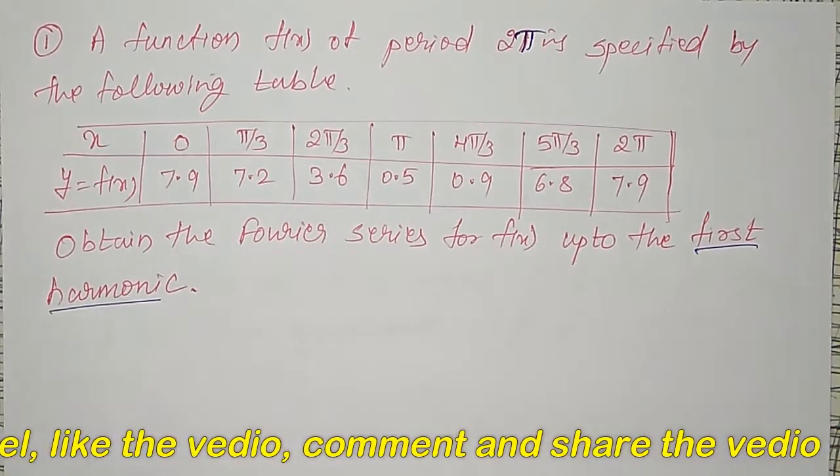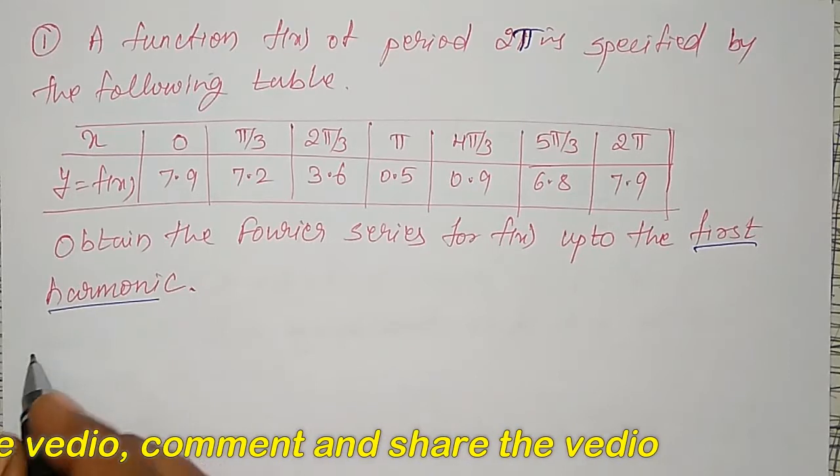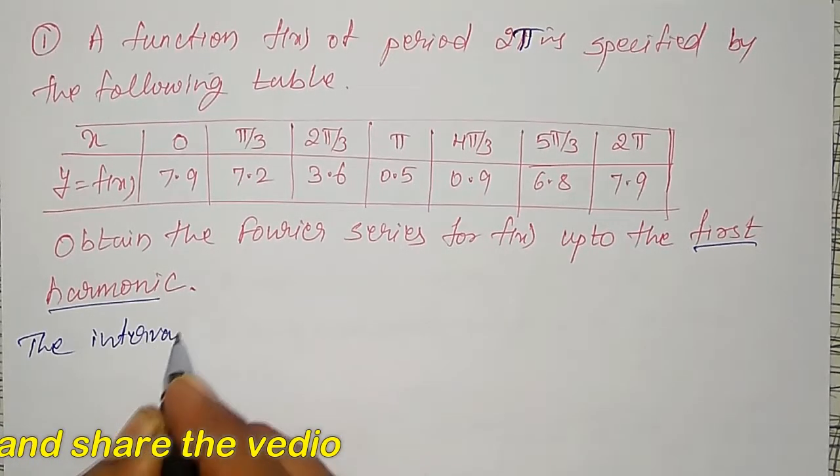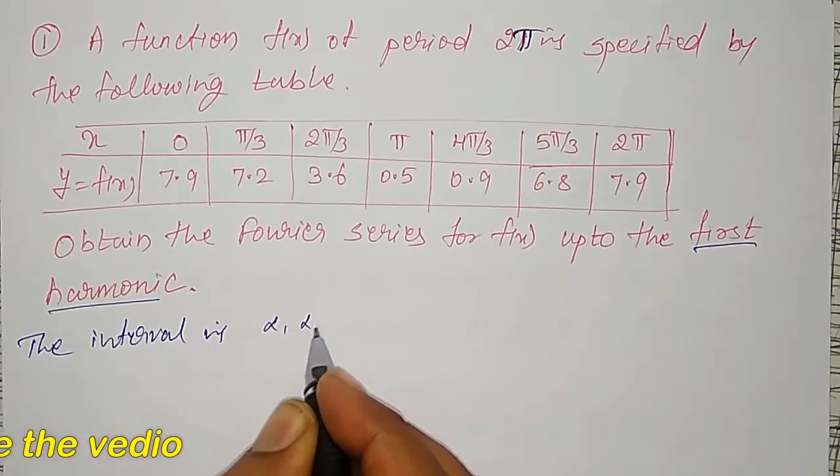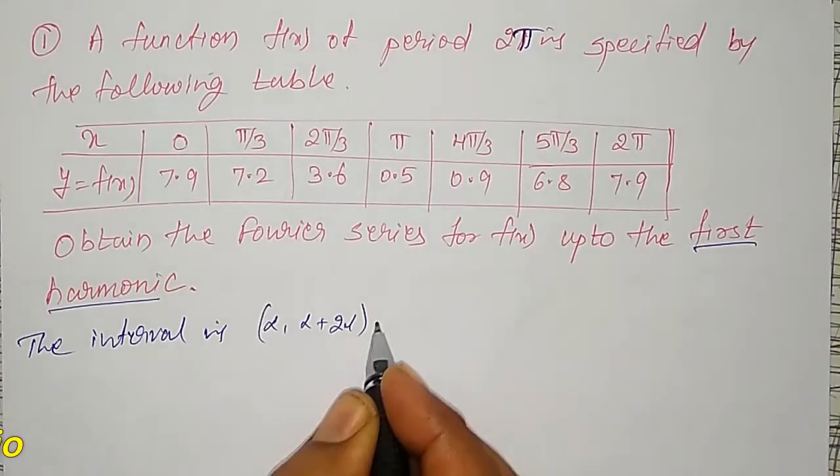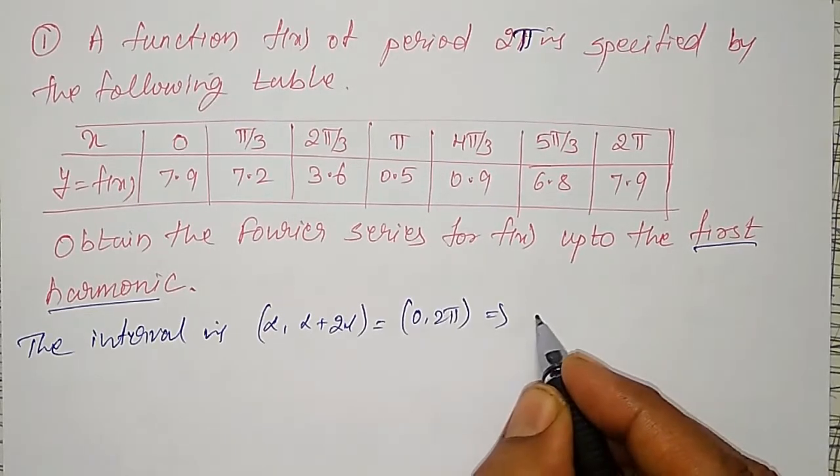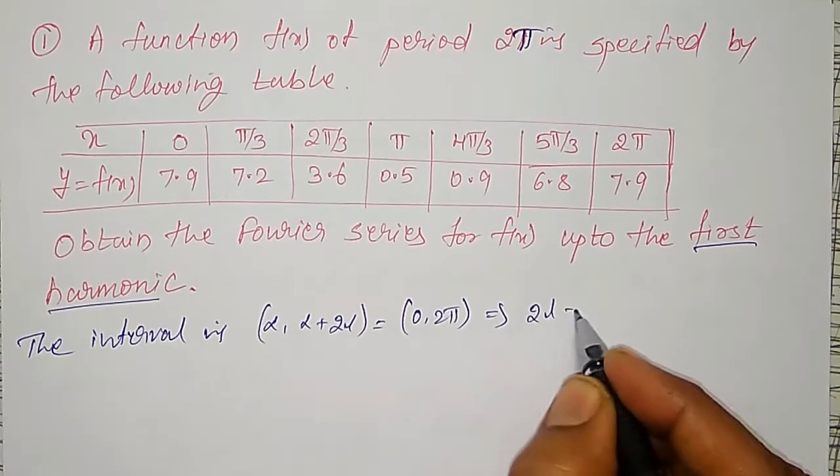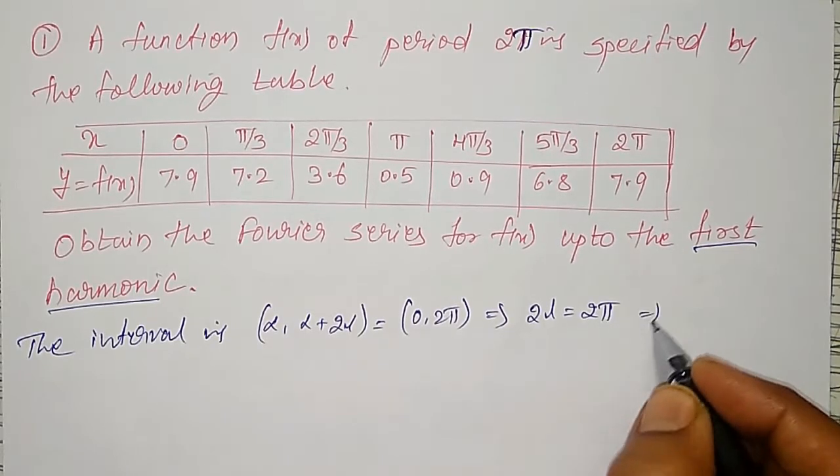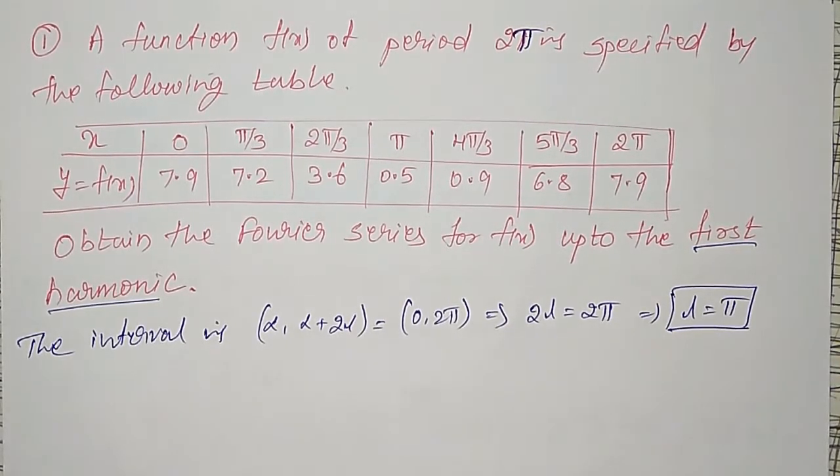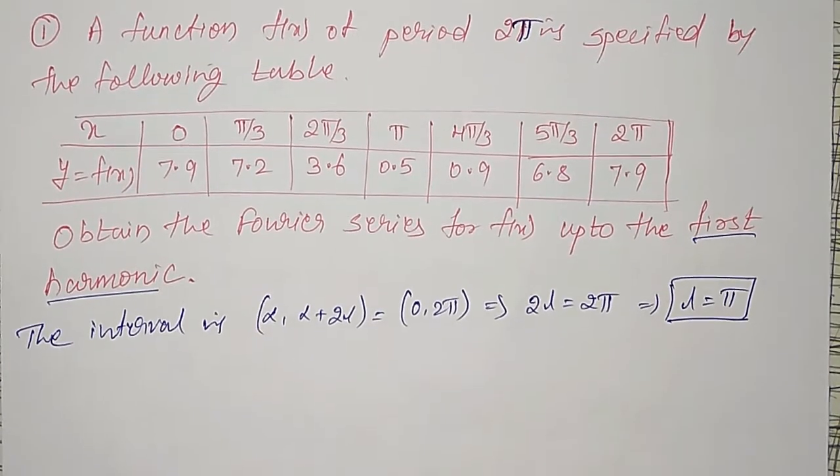First of all, the interval is alpha to alpha plus 2l, that is equal to 0 to 2π, which implies 2l equal to 2π, or l equal to π. My l equal to π.